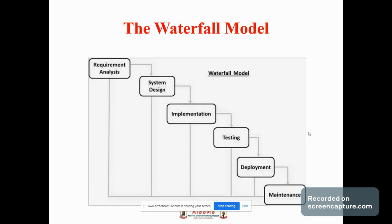The first software process model is the waterfall model. This diagram shows a detailed description of the waterfall model. The waterfall model is also referred to as a linear sequential life cycle model. It is very simple to understand and use. In a waterfall model, each phase must be completed fully before the next phase can begin. This type of software development model is basically used for projects which are small. At the end of each phase, a review takes place to determine if the project is on the right path and whether or not to continue or discard the project.